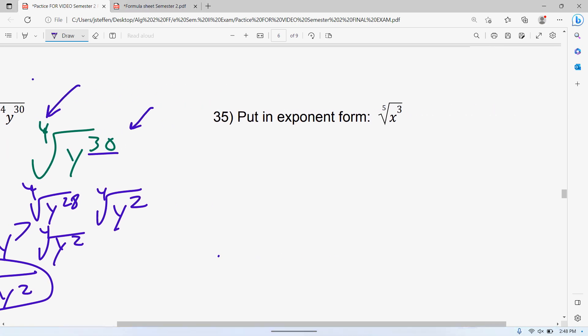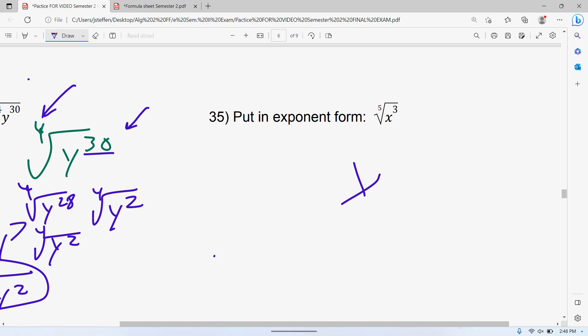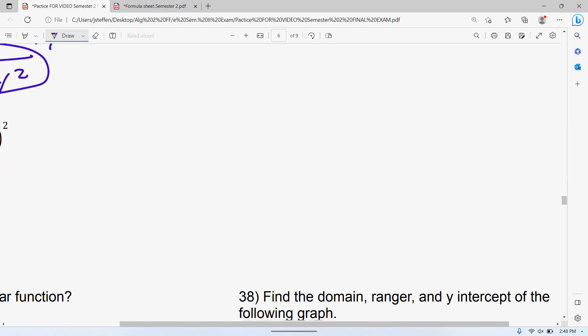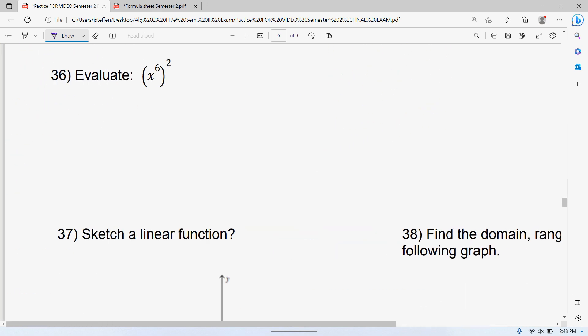35, put the next one in exponent form. Remember your exponent always stays as the exponent, your index number is always the denominator. This one shouldn't be too hard. You multiply it, it's just x to the 12 over 5.